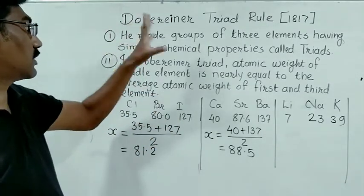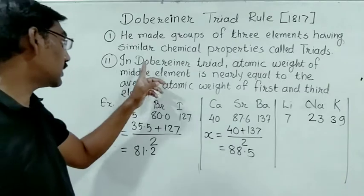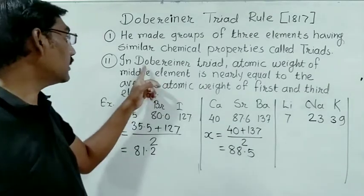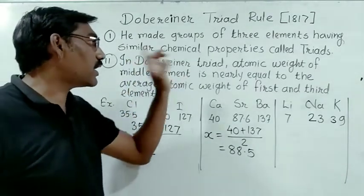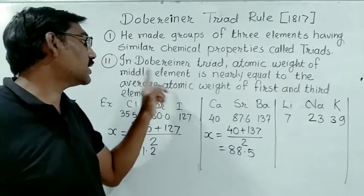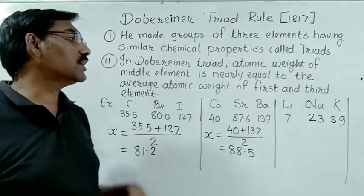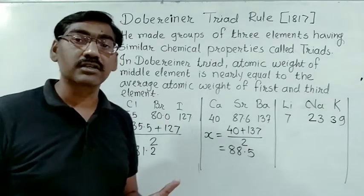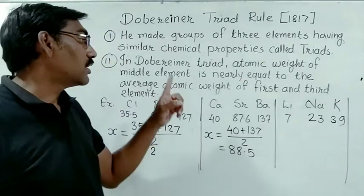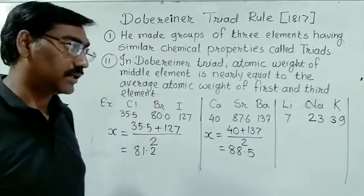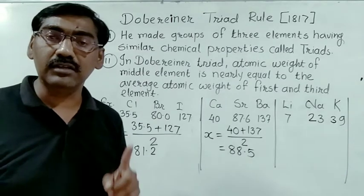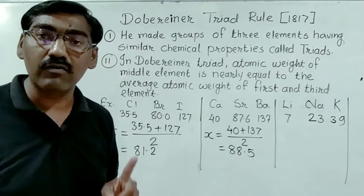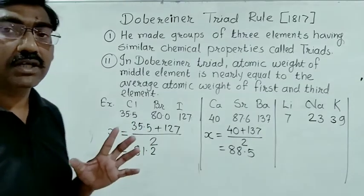In this Dobereiner triad of Li, Na, K, the atomic weight of the middle element — Sodium — should be nearly equal to the average atomic weight of the first element (Lithium) and the third element (Potassium).